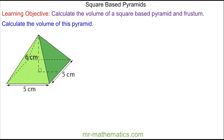Welcome to our lesson on calculating the volume of a square base pyramid. To work out the volume of a square base pyramid, we use the formula: volume equals the base area — which is the length multiplied by the width — multiplied by the perpendicular height, divided by three. This is the formula for finding the volume of a square base pyramid.